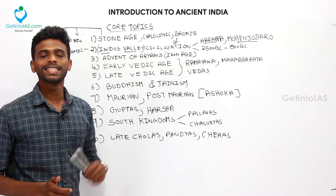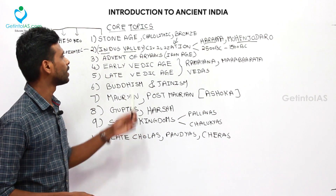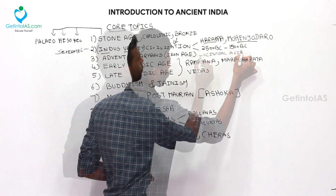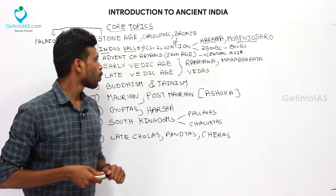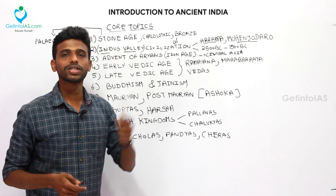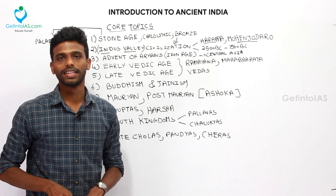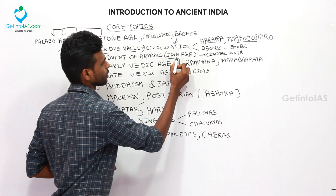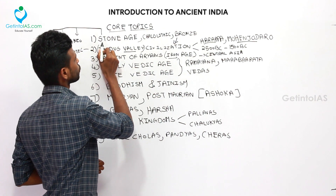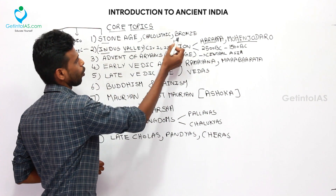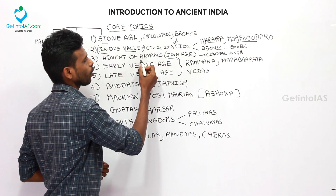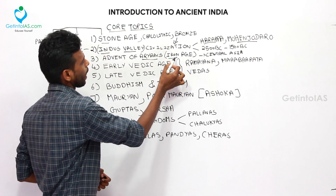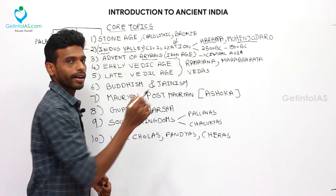Once the Indus Valley civilization got over, the Aryans began migrating to India from Central Asia. Once they reached India, they used iron to clear the forests in India. So that period is termed as Iron Age — till that point there was Stone Age and Bronze Age. But after the arrival of Aryans, Iron Age started to begin in India.